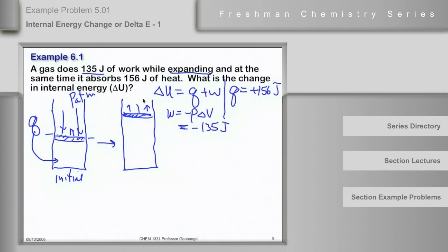Okay, by pushing the atmosphere back, the system is poorer by 135 joules. The internal energy is smaller. So, that gives us W.